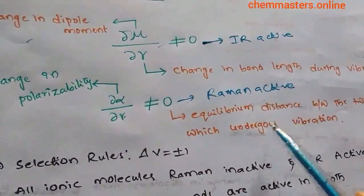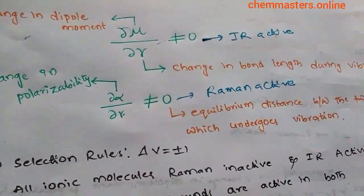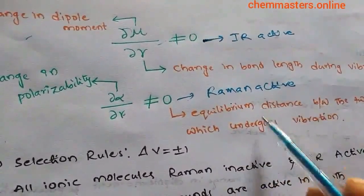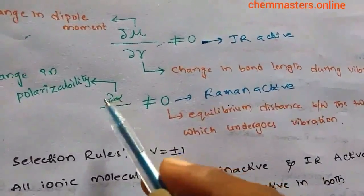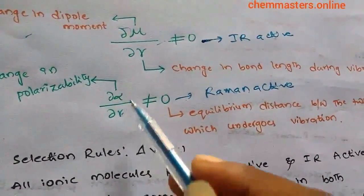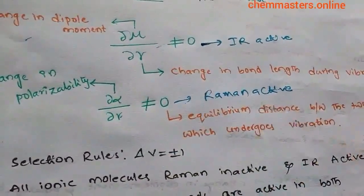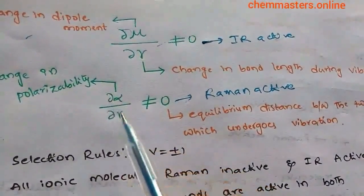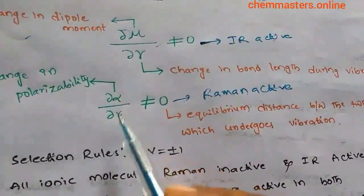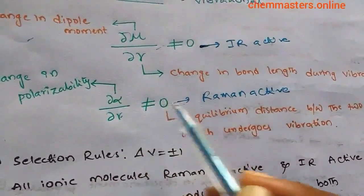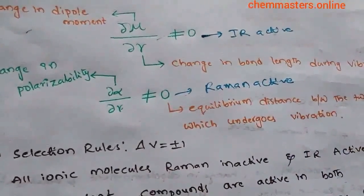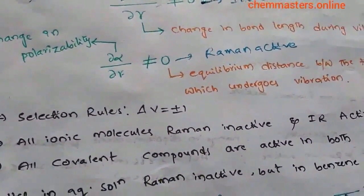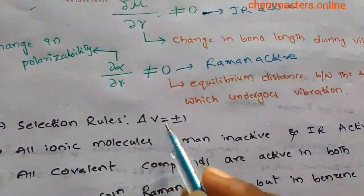If ∂α/∂r ≠ 0, that particular vibration of the molecule is Raman active. The zero indicates the equilibrium distance between the two atoms undergoing vibration. If the change in polarizability and the change in distance are equal, that leads to zero — then Raman inactive. The selection rule for IR and Raman is Δv = ±1.